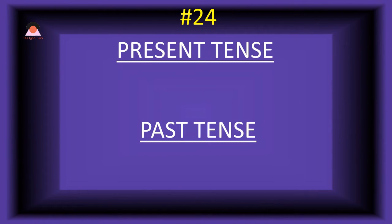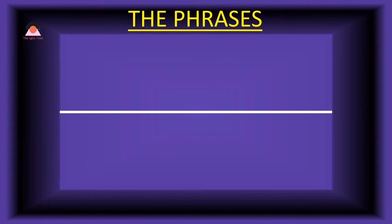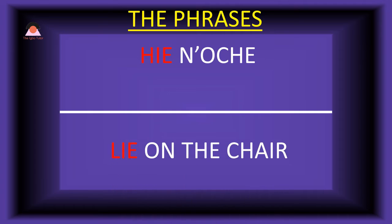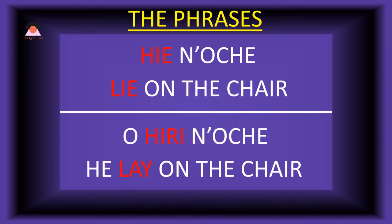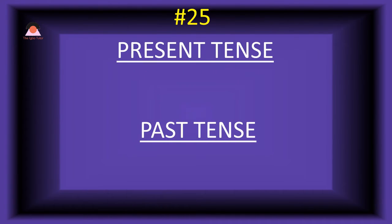Word number twenty-four: 'hie,' meaning 'lie.' The past tense of hie is 'hiri,' meaning 'lay.' Present tense phrase: 'hie no oche' — lie on the chair. Past tense: 'o-hiri no oche' — he lay on the chair.